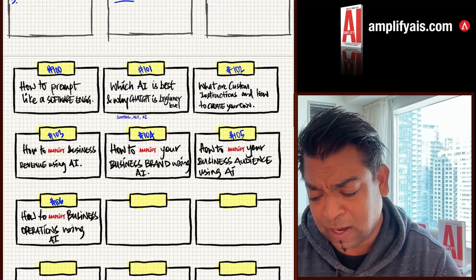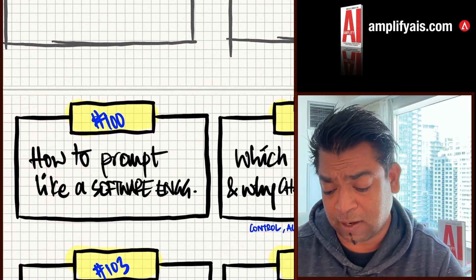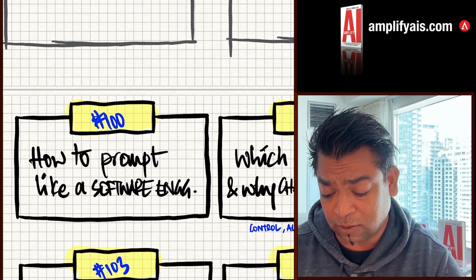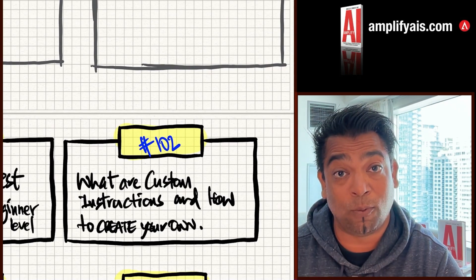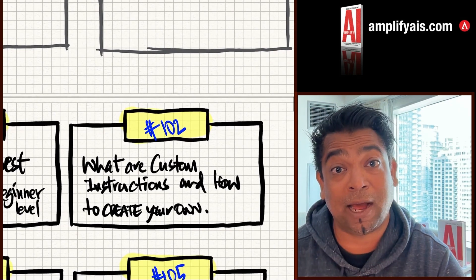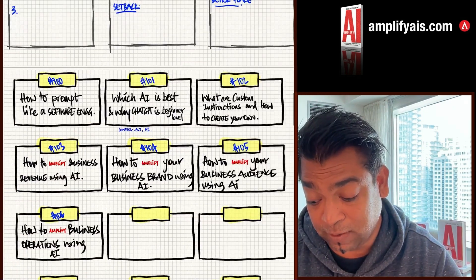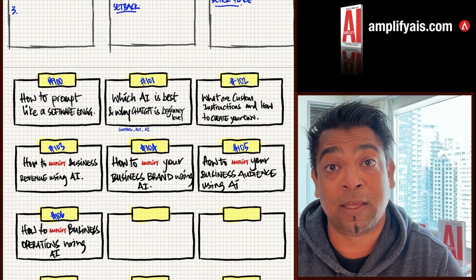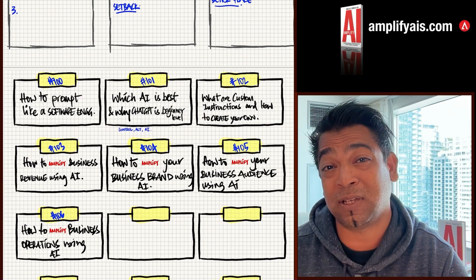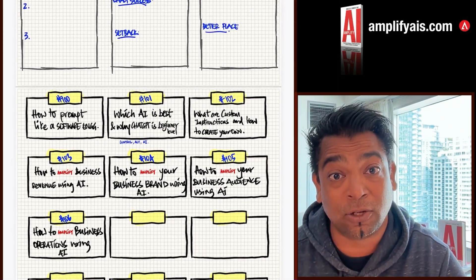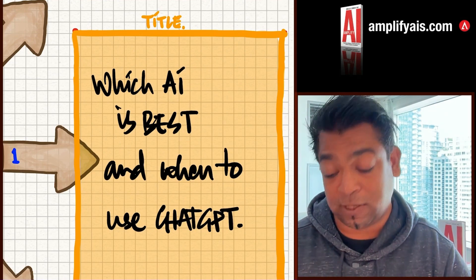If you don't know, I've started to make this plan — episode 100 covered how to prompt like a software engineer. If you haven't watched that, go check it out. The next episode covers custom instructions and how you can create your own. After that, I have three episodes on how to amplify your business revenue, brand, audience, and operations using AI — so look forward to that. Today is which AI is best and when to use ChatGPT.